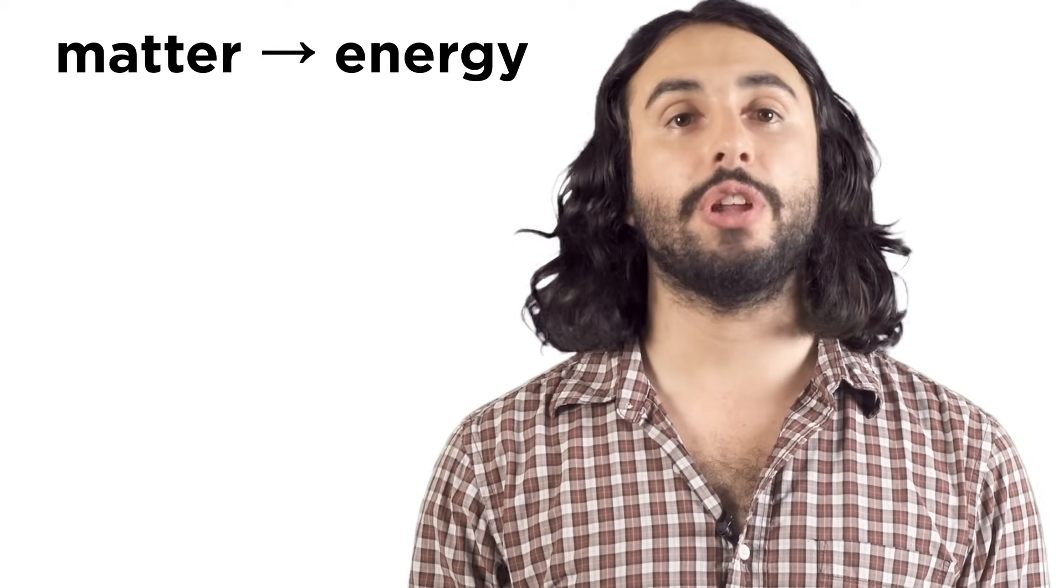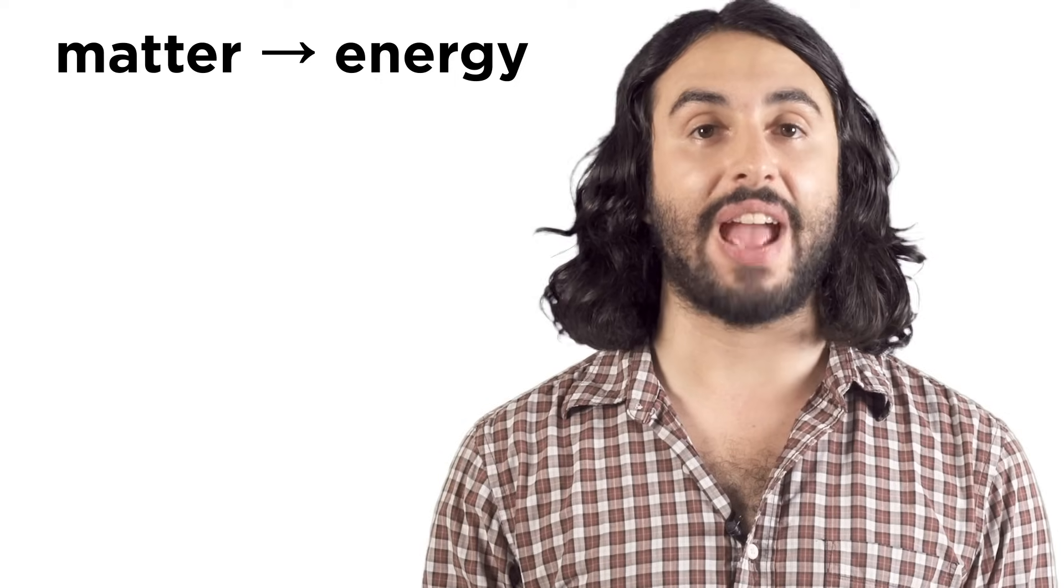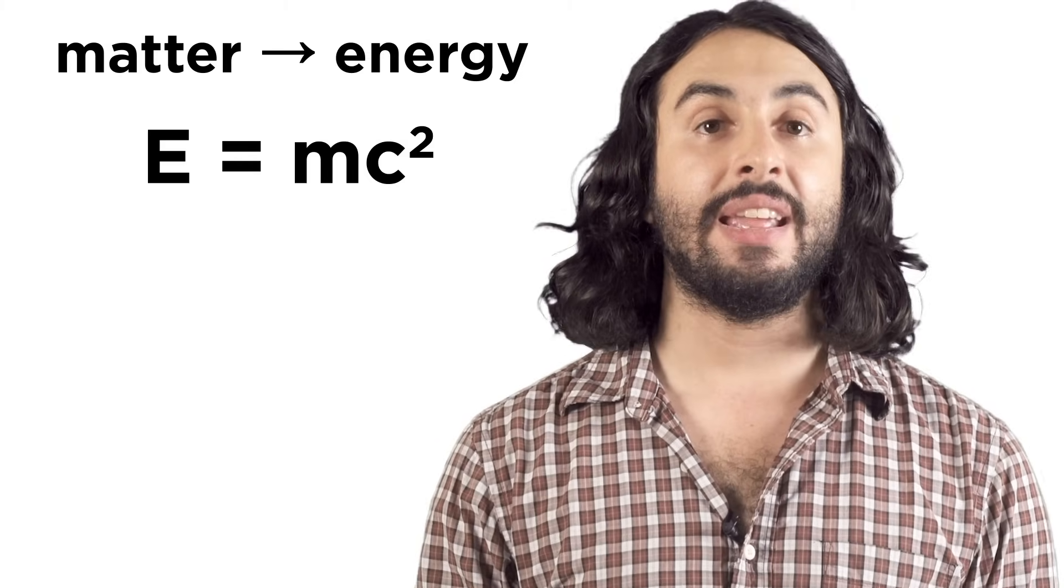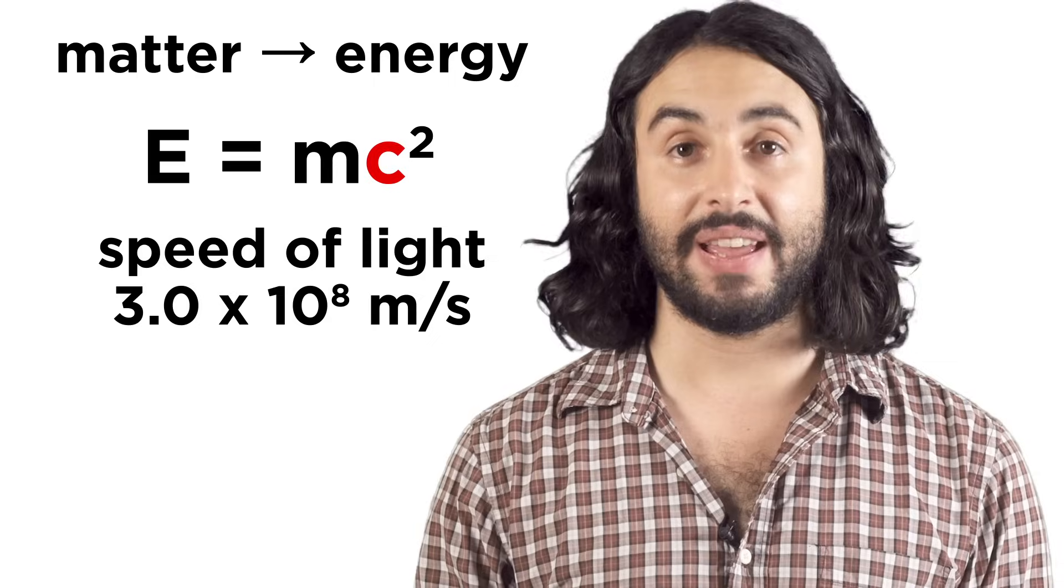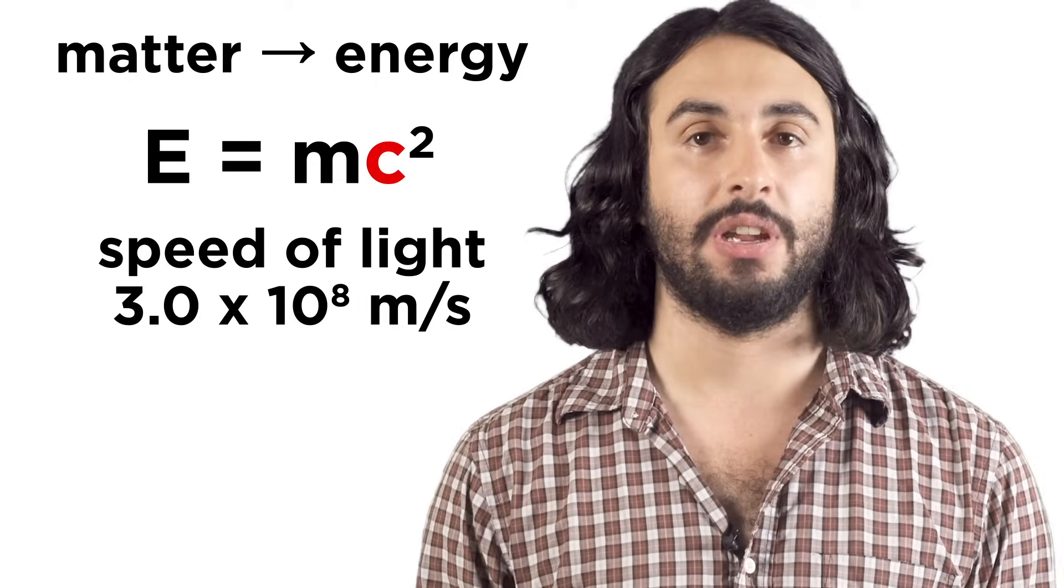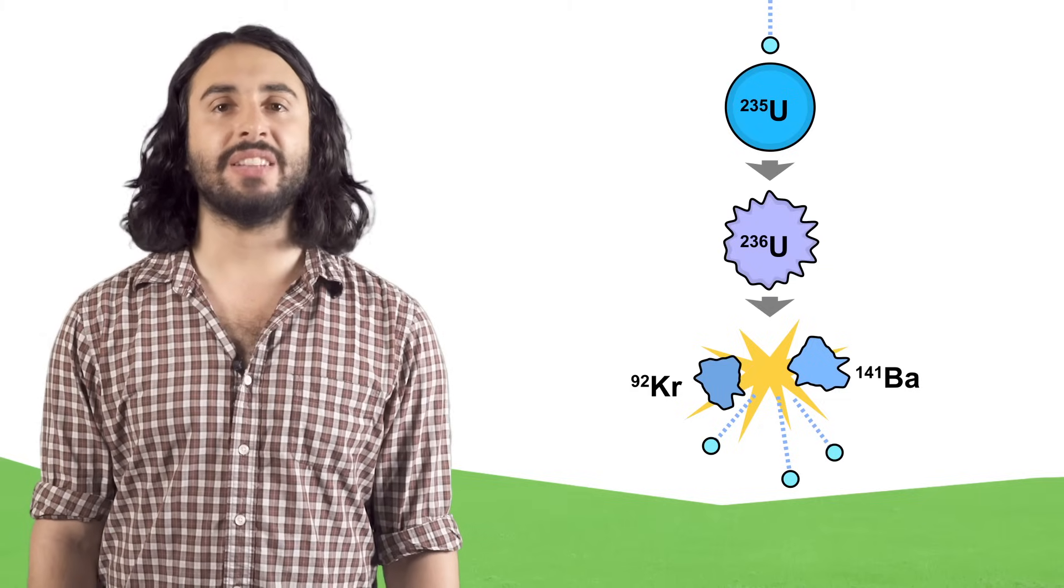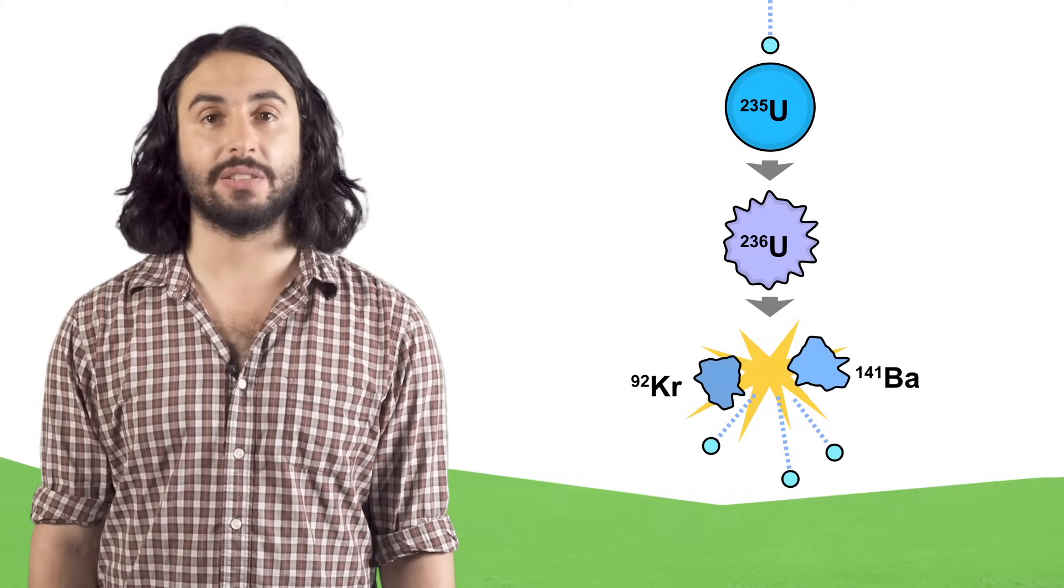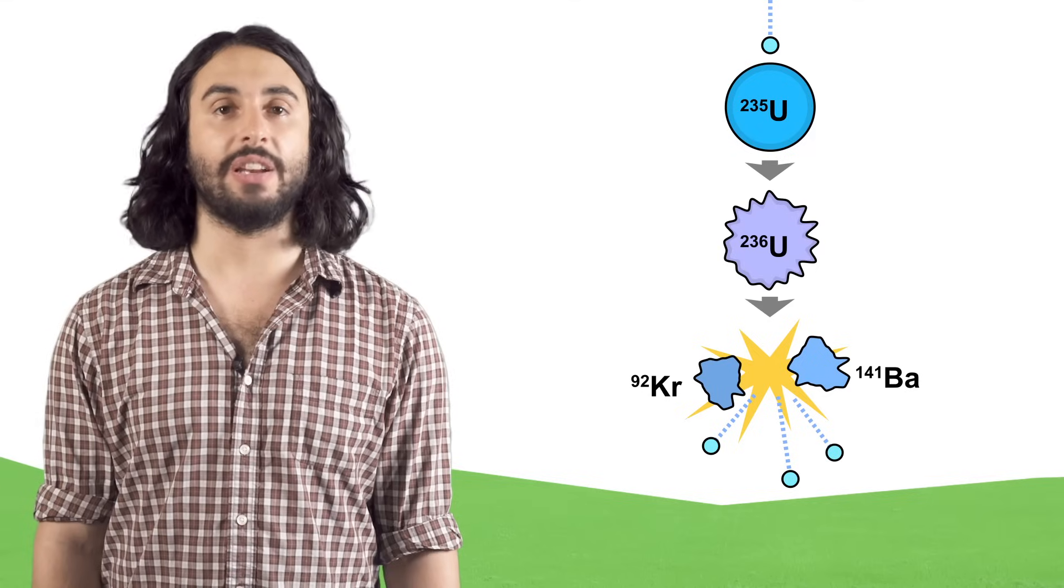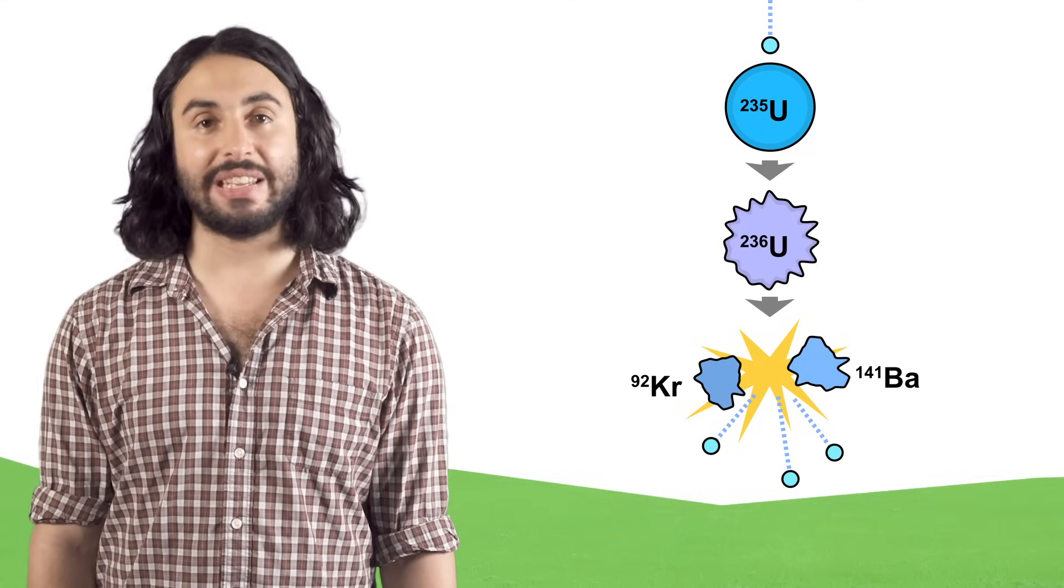By learning about nuclear processes, we can harness the massive energy they contain. With nuclear processes, matter is converted directly into energy, as is given by Einstein's famous equation E equals mc squared. Here, c is the speed of light, which is very big, so what this equation says is that matter is simply extremely dense energy, the densest form there is. We have harnessed this power already with atomic bombs, much to the dismay of mankind. These worked by bombarding unstable uranium nuclei with neutrons, which cause them to split, generating more neutrons which collide with other uranium nuclei, causing a chain reaction that releases tremendous energy.